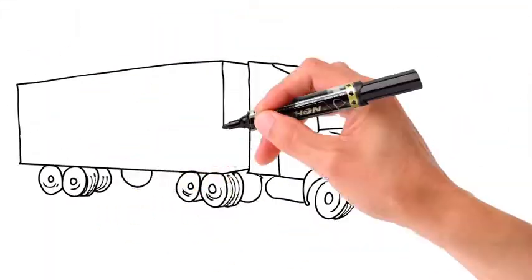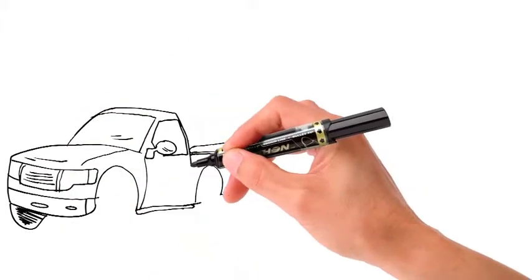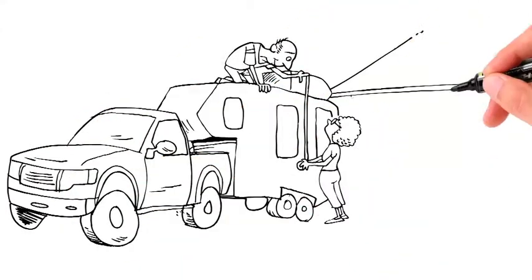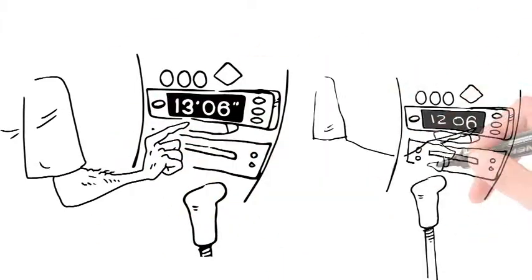Here's how it works. The driver measures the tallest point of his trailer or oversized load. For an RV, it would probably be the AC unit or the TV antenna. Program that height into the in-cab readout.